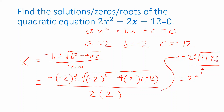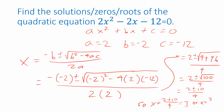So this becomes 2 plus or minus the square root of 4 plus 96, which is 100. The square root of 100 is 10, simplifying to 2 plus or minus 10, all divided by 4. Using the plus sign: 2 plus 10 is 12, divided by 4 gives x equals 3. Using the minus sign: 2 minus 10 is negative 8, divided by 4 gives x equals negative 2. So the two solutions are x equals 3 and x equals negative 2.